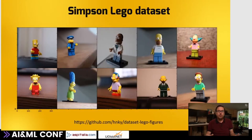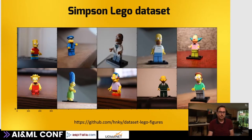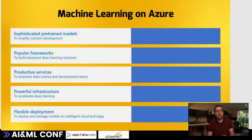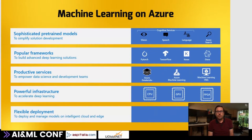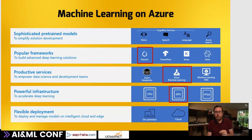For that, we're going to use my Simpsons Lego dataset, available on my GitHub, so you can download it and redo this all at home. The tools we'll use are Azure Machine Learning, PyTorch, a GPU-enabled compute cluster, and finally we will deploy our model into the cloud.